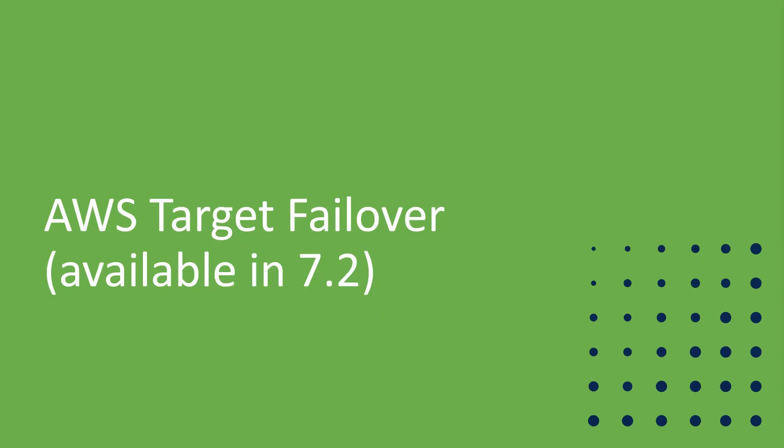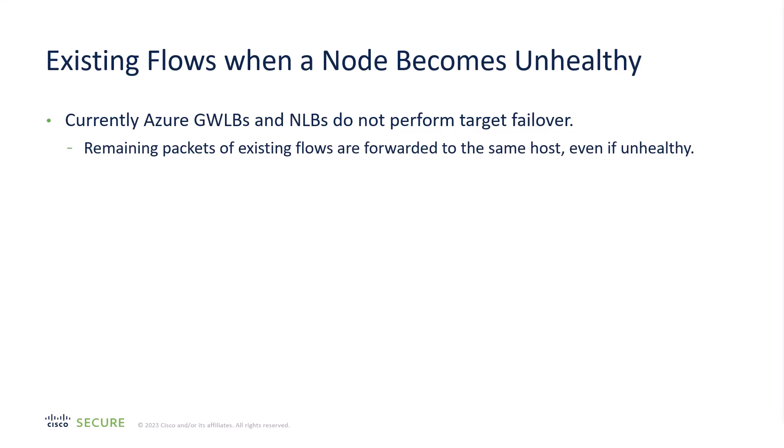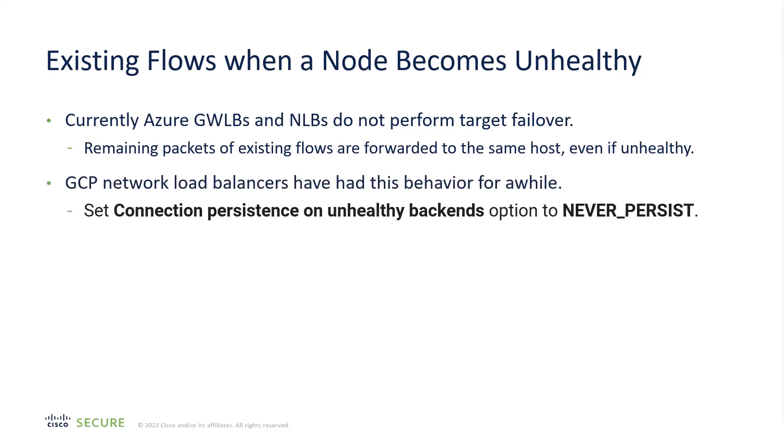Let's talk about AWS target failover. This involves what you do with existing flows through a Layer 3 load balancer. In Azure, neither the gateway nor network load balancer performs target failover — if a target becomes unhealthy, existing flows continue to be forwarded to that target and will not fail over to a healthy target. Google Cloud has allowed you to configure target failover, which they call connection persistence — setting it to never persist means don't persist in sending traffic to the unhealthy host. Therefore, when we introduced clustering on Google Cloud in 7.2, we provided connection-level resilience.